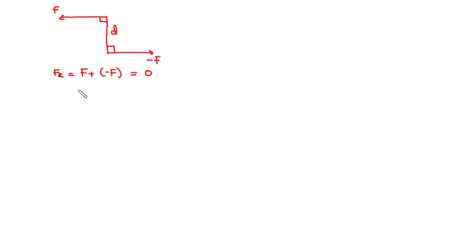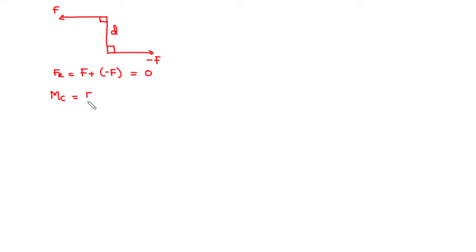Since the resultant force is zero, the only effect of a couple is to cause a tendency of rotation, or to rotate. The moment of a couple is called a couple moment, given as MC, which is equal to the magnitude of one of the forces times the perpendicular distance between the two forces.